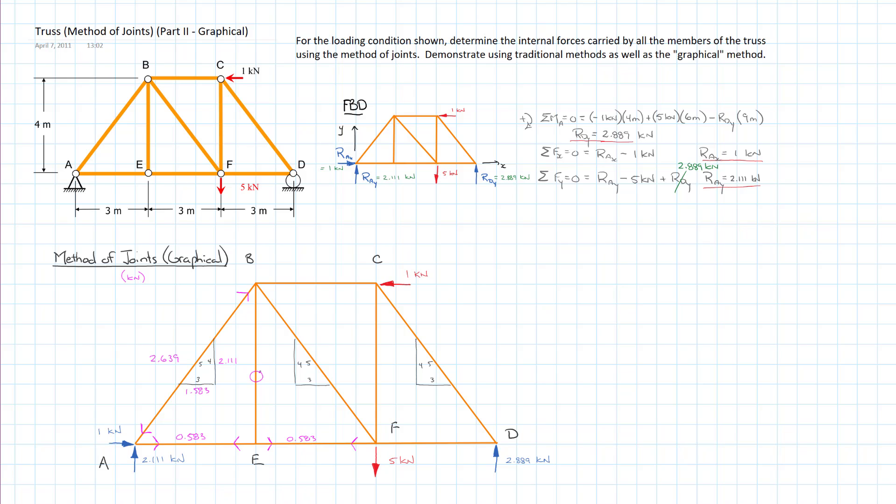Joint E makes the most sense to me now because I have a left component coming into it of 0.583, so I have to have a right component equal and opposite of 0.583. If I look at the vertical component, we know that member must equal zero.